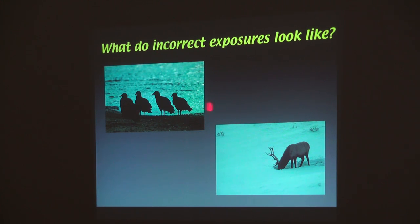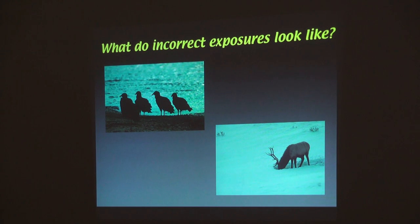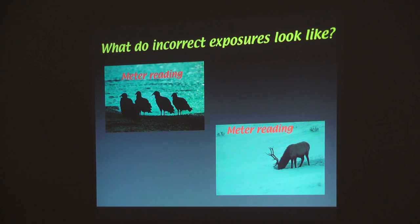Or you have subjects that are silhouettes that you thought shouldn't have been silhouettes. That's why — because the background is too bright. The camera's setting everything at 18%. Both of those metering readings are wrong.